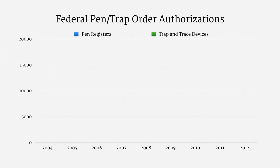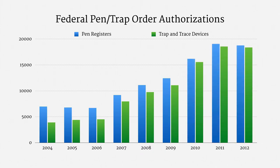The Pen Register Act includes a reporting requirement for federal law enforcement agencies, so it's possible to get a rough sense of how pen traps are used. For quite some time, the Department of Justice dragged its heels in publicly sharing these reports, but they're now fairly regular. One apparent trend is that federal agencies are increasingly turning to pen trap authority — applications have roughly tripled or quadrupled over the past decade. Orders for outgoing calls, that is pen registers, were historically much more common but now are about at parity with orders for incoming calls.